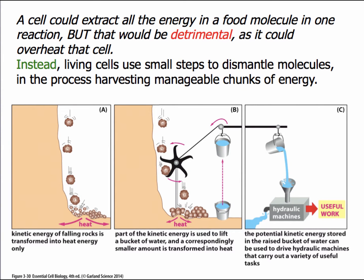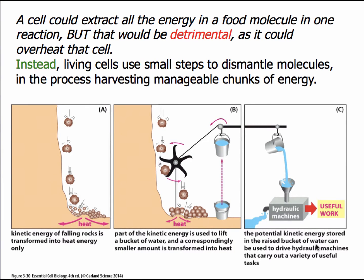This slide presents us with a number of profound implications of energy harvesting. As panel A shows, energy in food could be released in one step. However, most of that energy would then be wasted as heat into the environment, and it may be strong enough to even destroy or disable the cell in some capacity. So nature has come up with solutions as indicated in panels B and C.